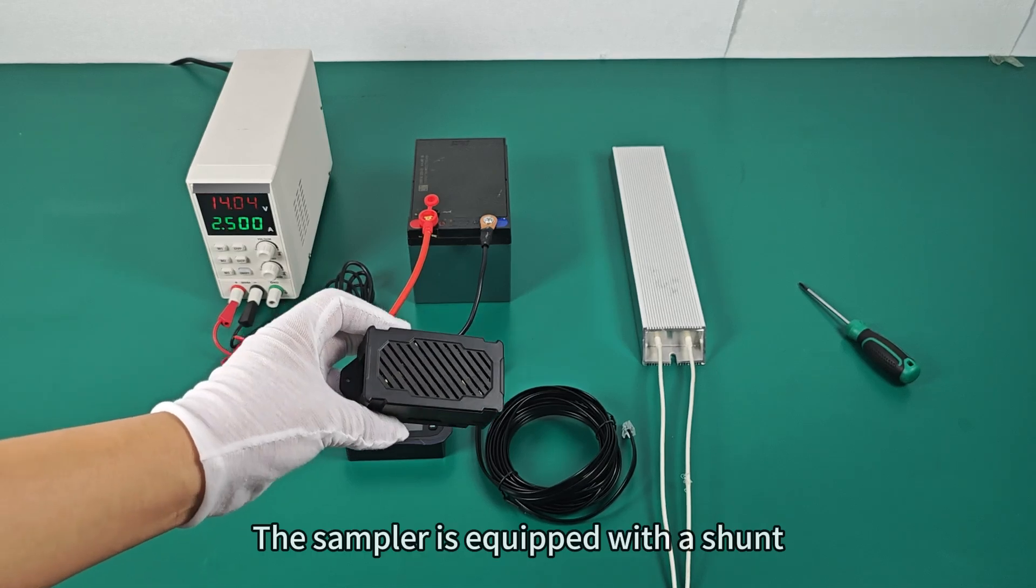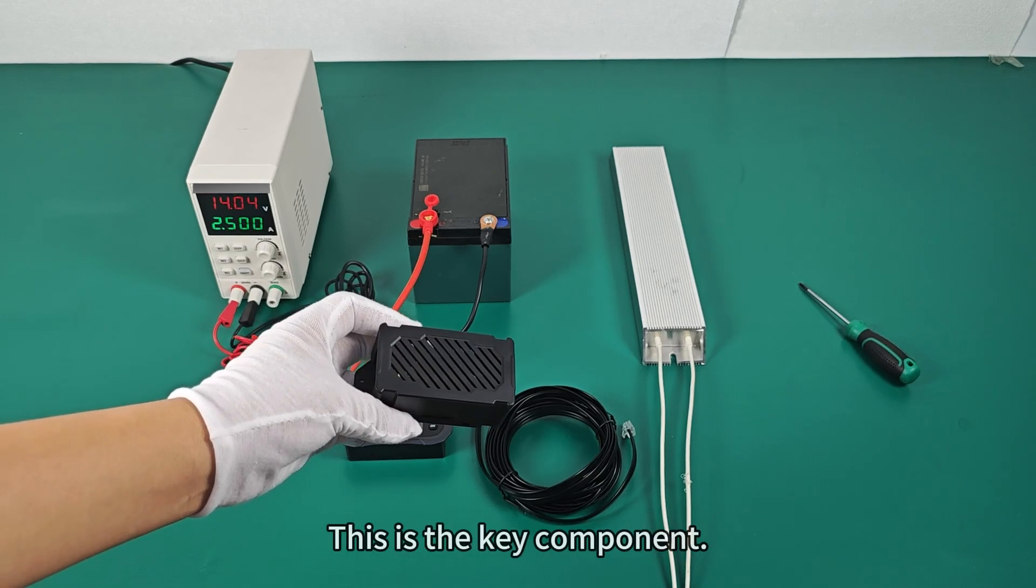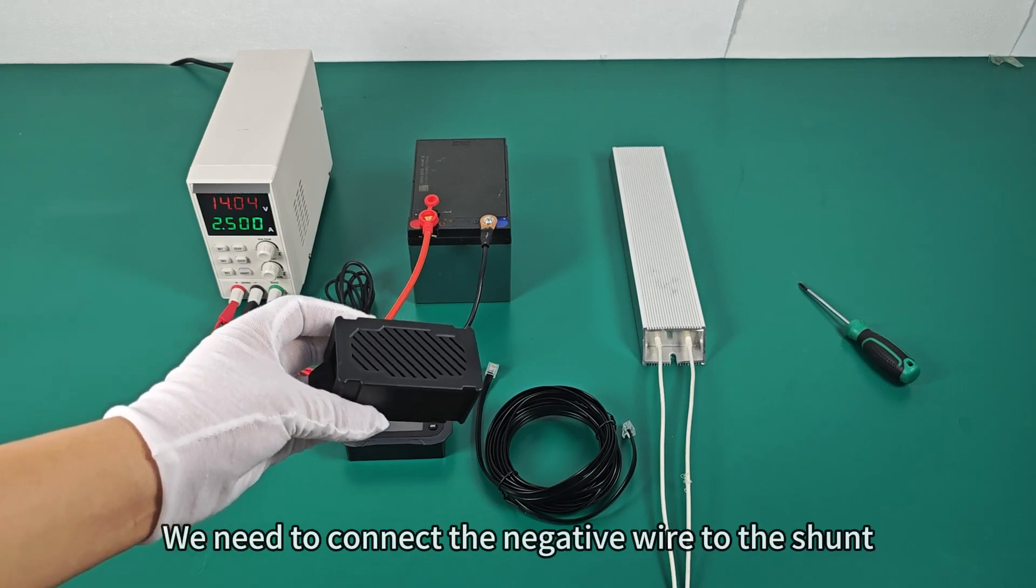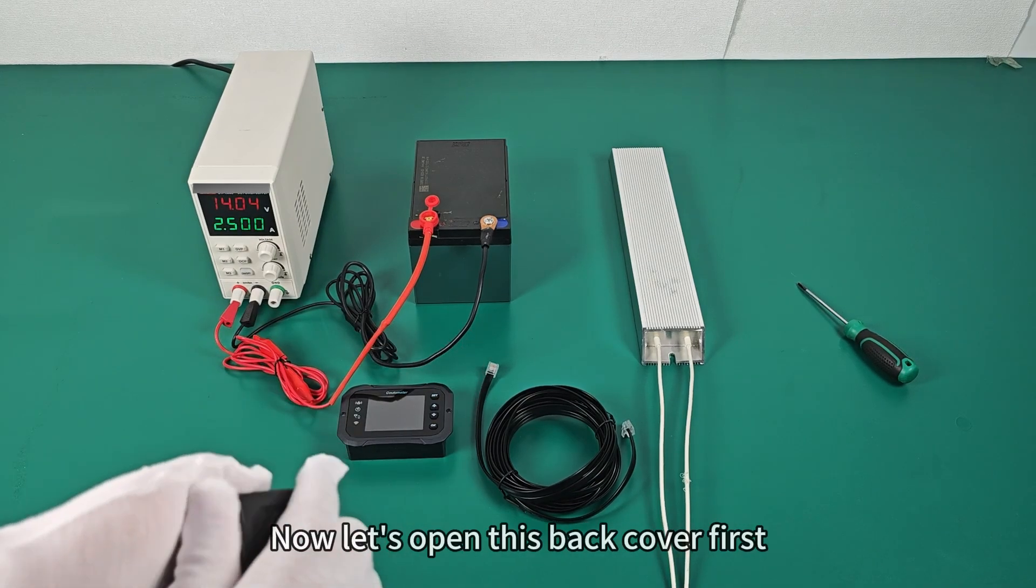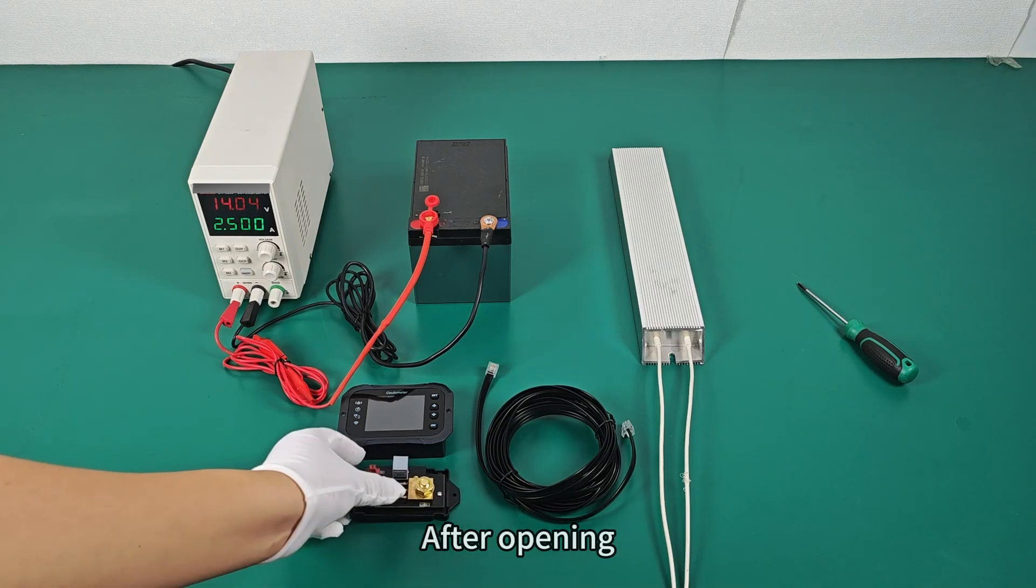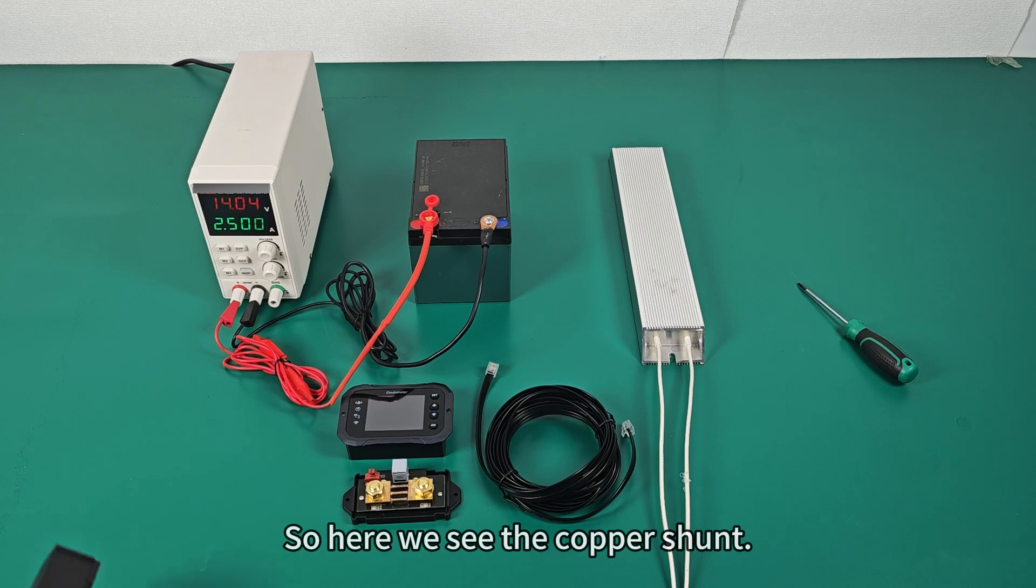The sampler is equipped with a shunt. This is the key component. We need to connect the negative wire to the shunt. Now let's open this back cover first. After opening, here we see the copper shunt.